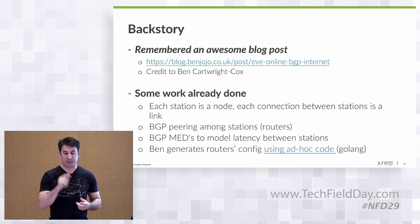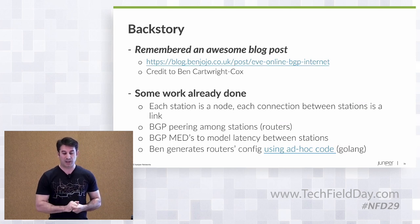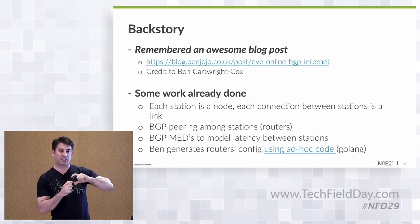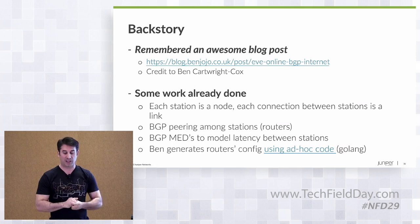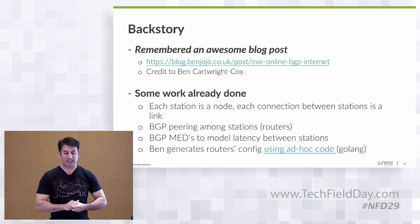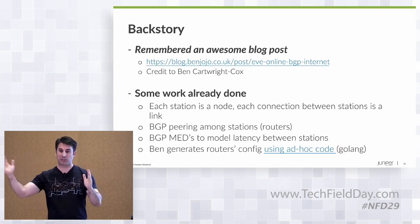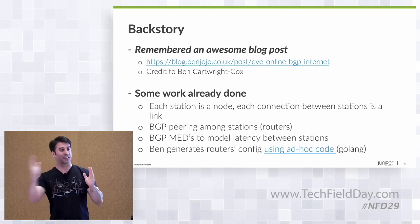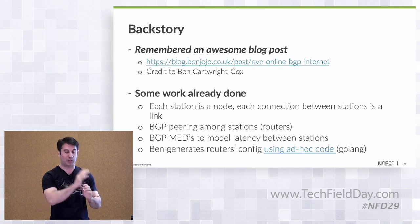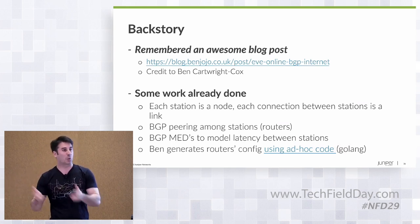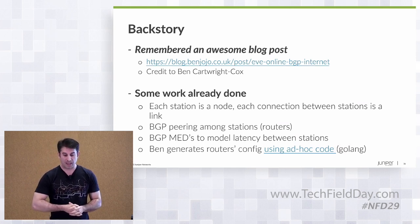The cool idea was that each station in the London subway system is a node in the network, and connections between stations are modeled as links with a BGP peer. The shortest path from station A to station B is not just the minimum number of hops — you model latency information between links, for example how many seconds it takes to travel between stations, using BGP Multi-Exit Discriminators to represent that latency.